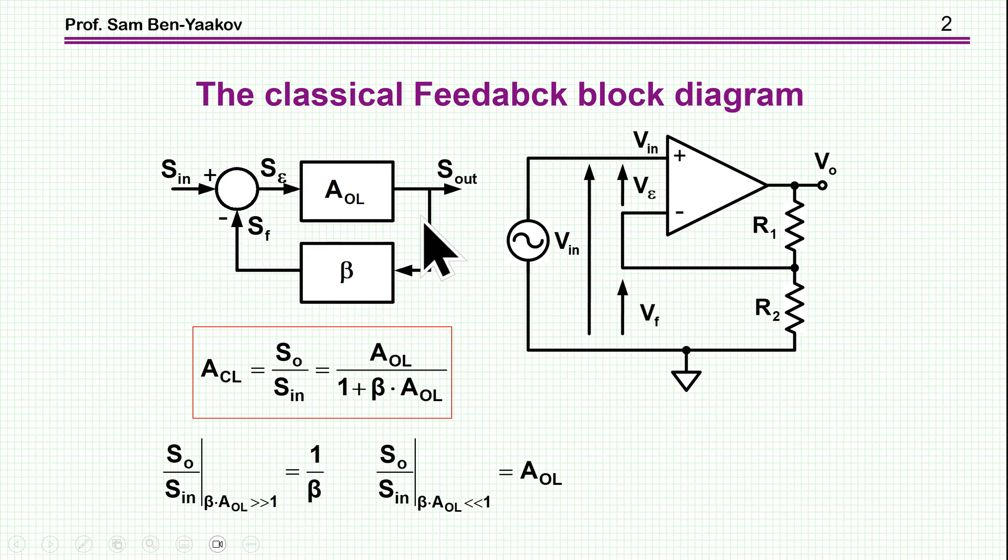Which is the beauty of negative feedback, that the closed loop gain is a function of beta, which could be a passive network, while here the open loop could be an amplifier which has drifts, changing gains, etc. So this is very well known, and as I've said, this fits very well with this non-inverting amplifier.